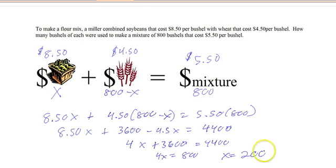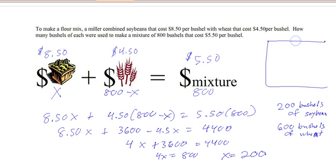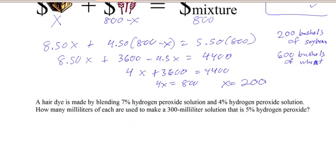Solve the equation. And that gives us 200. And what are we talking about? Bushels. So that means we have 200 bushels of whatever the x is, which is soybean. And what's left is the 600 bushels of wheat. And again, now we just have to check it. And there you go, checks out.